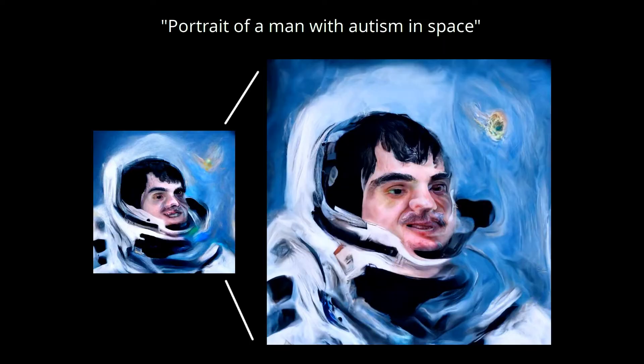The upscaling function was built in one night and it wasn't really that good. The process of the old upscaling function goes something like this: you take the 512 by 512 image, double its resolution, add noise on top of it, and then let the same CLIP model and diffusion model denoise the image again, which adds more details to it. However, it didn't always look as good as I hoped — many of the details did change.